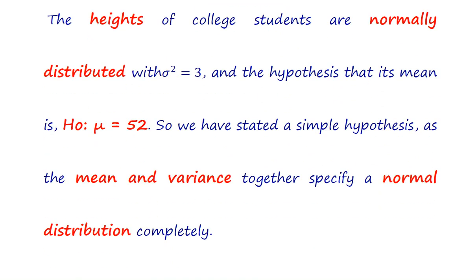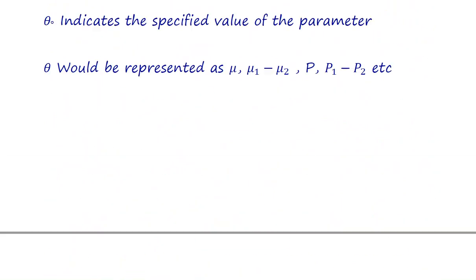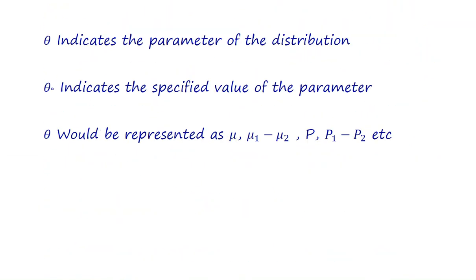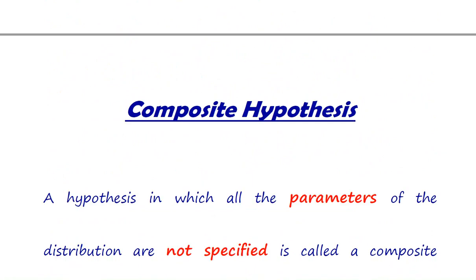The distribution is the normal distribution and the parameters of the distribution are completely specified. So this is an example of a simple hypothesis.